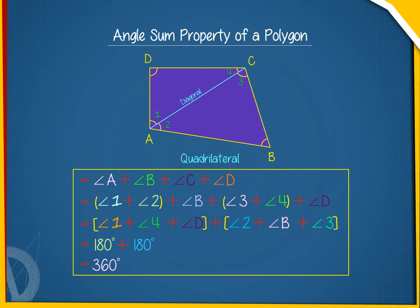So we conclude that the sum of the measures of the four interior angles of a quadrilateral is 360 degrees.